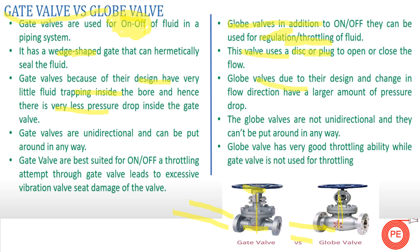Gate valves are unidirectional — you can use gate valves in any direction. We don't have any specific direction to fit the gate valve in the piping system. But globe valves have a specific direction — they are not unidirectional. They have to be put in the system in the direction for which they are manufactured. Globe valves generally have an arrow on the body, and based on that arrow — upstream or downstream — we place the globe valve inside the system.